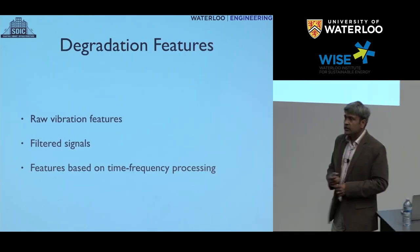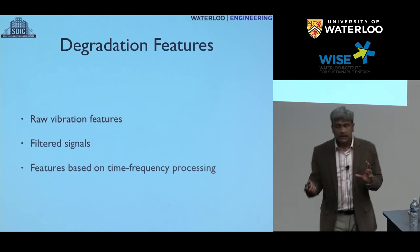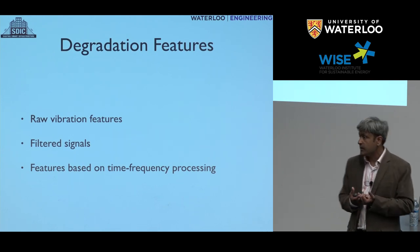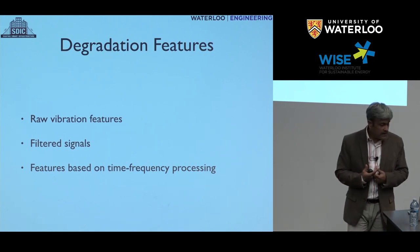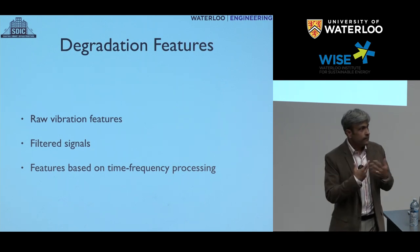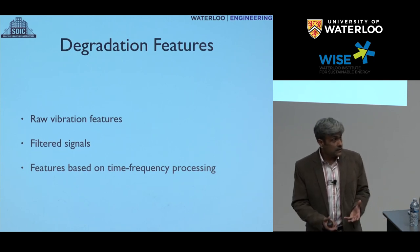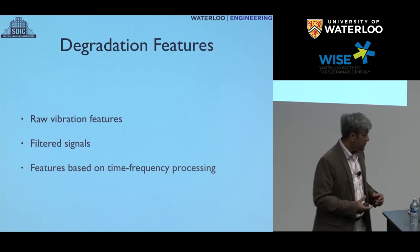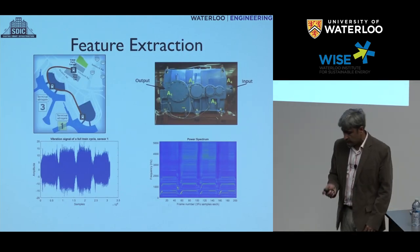Let's talk about the degradation features themselves. The environment model requires features, and here we are using a completely data-driven environment model — building environment models straight out of the features. We have a combination of raw vibration features: vibration data processed into features, filtered signals converted into features, and features based on time-frequency processing using more advanced methods. For feature extraction, we take vibration data from the train. You can see very clearly the train starts, goes to the first station, then the second leg, coming back — four legs in total — and the vibration data shows very different characteristics across each leg.